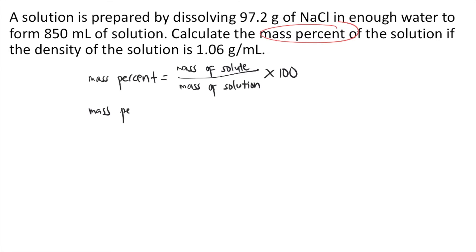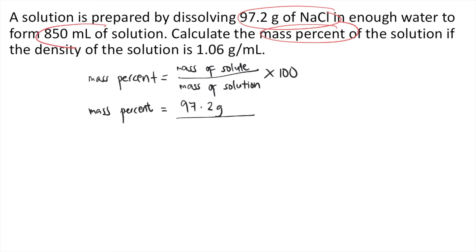In the problem, we are given the mass of solute. Our solute is NaCl, so the given mass is 97.2 grams. However, we are not given the mass of solution — what is given to us is the volume of the solution, which is 850 ml.